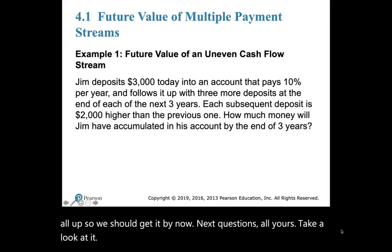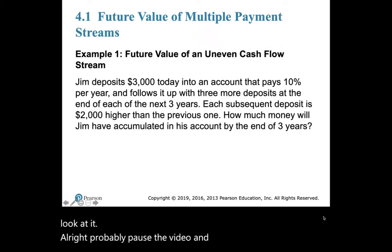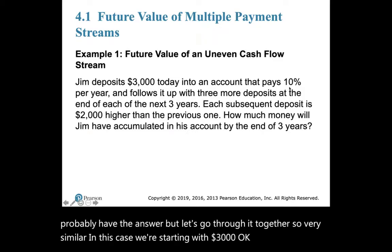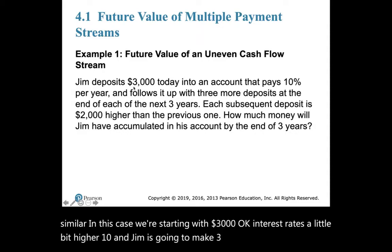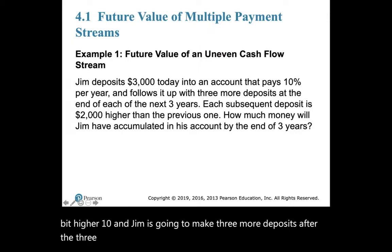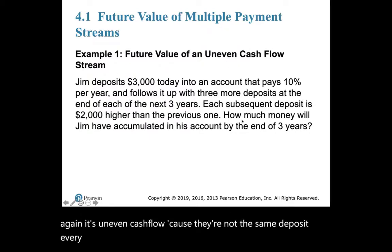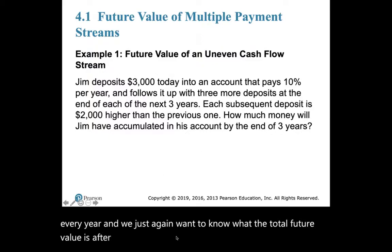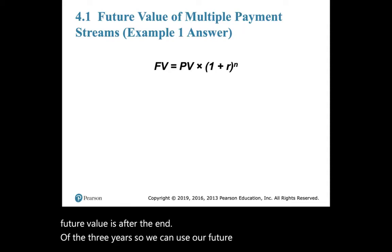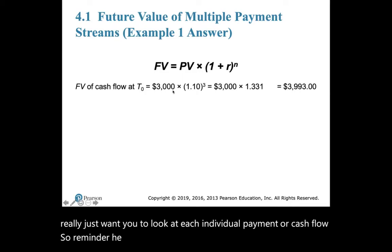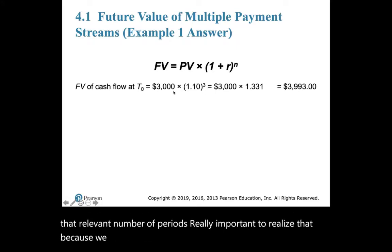Let's go through a worked example. We're starting with $3,000, the interest rate is 10%, and Jim is going to make three more deposits after the initial $3,000 — each time $2,000 more. So again it's an uneven cash flow because the deposits aren't the same every year, and we want to know the total future value at the end of three years. Using our future value equation, we look at each individual payment. Because the $3,000 deposit is made at the start, we accumulate three years of interest.